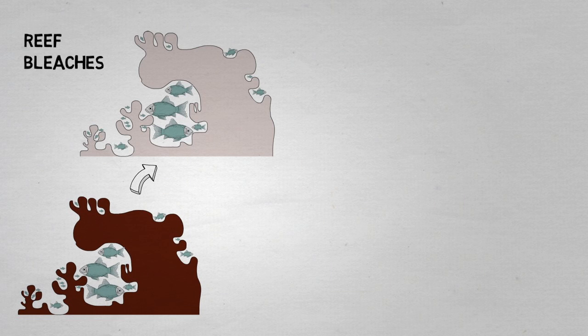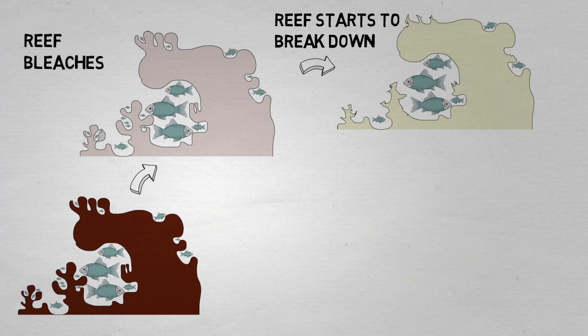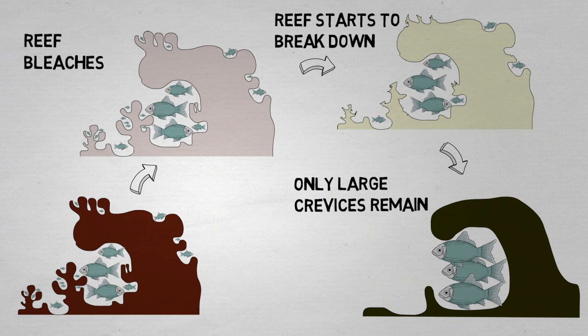In an initial study looking at what happens to a reef after a bleaching event, I discovered loss of both small and mid-sized refuges, followed by a loss in small and mid-sized fish.